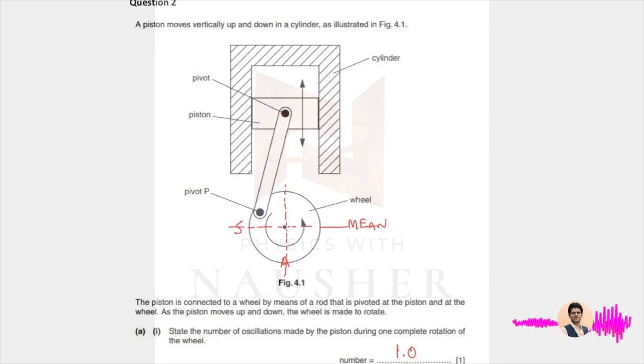Now in question number two, they're saying state the number of oscillations made by the piston. This is the piston. State the number of oscillations made by the piston in one complete rotation of the wheel.